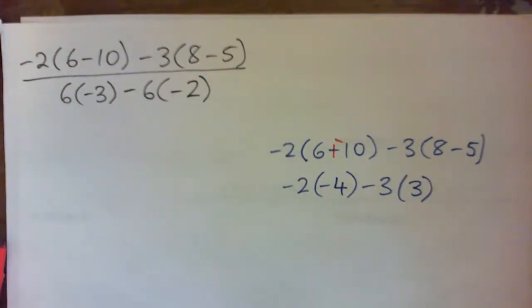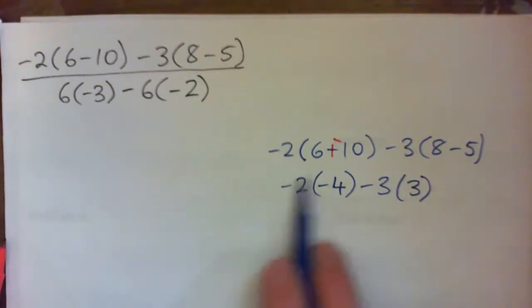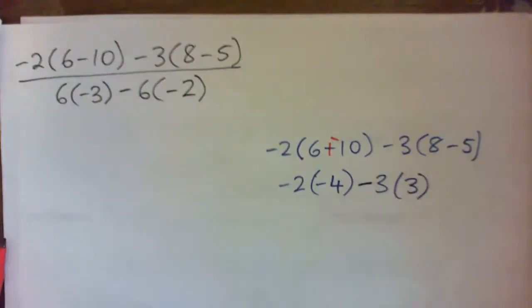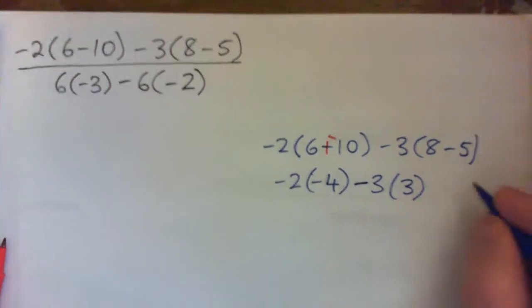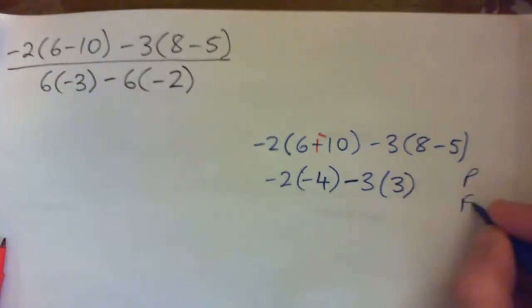And next step, remember that you've got to think about PEMDAS. We've got multiplication happening here and here, and then this is like a subtraction in between. So we have to do these multiplications. We're following the order of operations. PEMDAS: parentheses, exponents, multiply, divide, add, subtract, right?